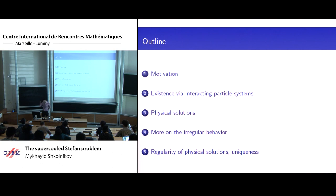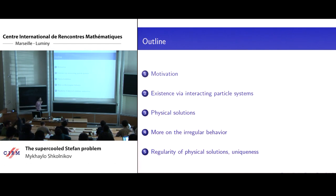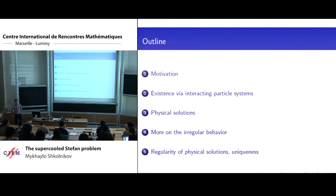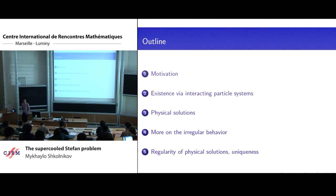The plan for the talk is I'll give you a bit of historical background and motivation for the supercooled Stefan problem — the topic of my talk — and Stefan problems in general. I'll try to explain that even though the problem is a PDE problem from the mathematical perspective, there is a natural barrier to how far you can go with PDE techniques. The main message will be that there is a probabilistic reformulation of the problem which allows you to go beyond that barrier and construct global solutions, whereas before only local solutions were considered.